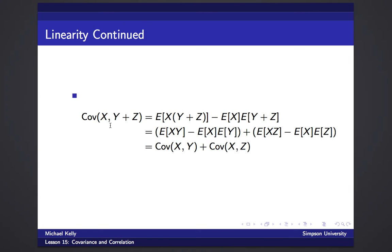Using the alternate formula, the covariance of X with the sum Y + Z is E[X(Y+Z)] minus E[X]·E[Y+Z]. Distributing X and splitting the sum gives E[XY] + E[XZ] minus E[X]E[Y] minus E[X]E[Z]. Rearranging, this is (E[XY] minus E[X]E[Y]) plus (E[XZ] minus E[X]E[Z]), which equals Cov(X, Y) plus Cov(X, Z). So covariance is linear in each coordinate.